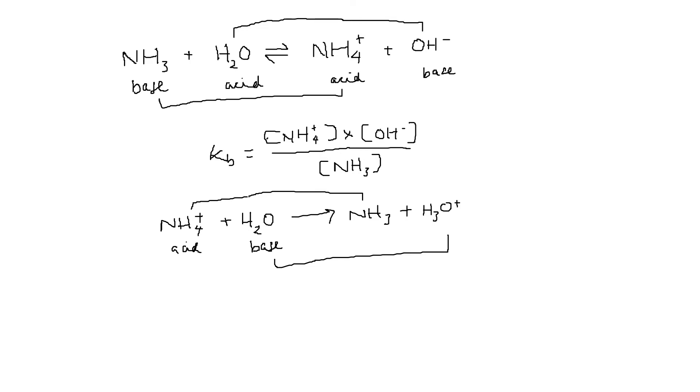Now we can write the acid dissociation constant for this particular reaction which we represent by Ka. So Ka in this case, starting with what's on the right-hand side of the equation, is equal to the concentration of NH3 multiplied by H3O+